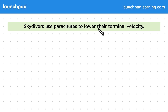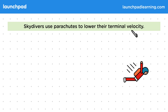Skydivers use parachutes to lower their terminal velocity, which is the constant speed they'll eventually reach when falling. Parachuting isn't mentioned on your spec directly, but it's probably the most popular example of terminal velocity used in exams. There are a few extra details here compared to other falling objects, so let's go through this process in detail.